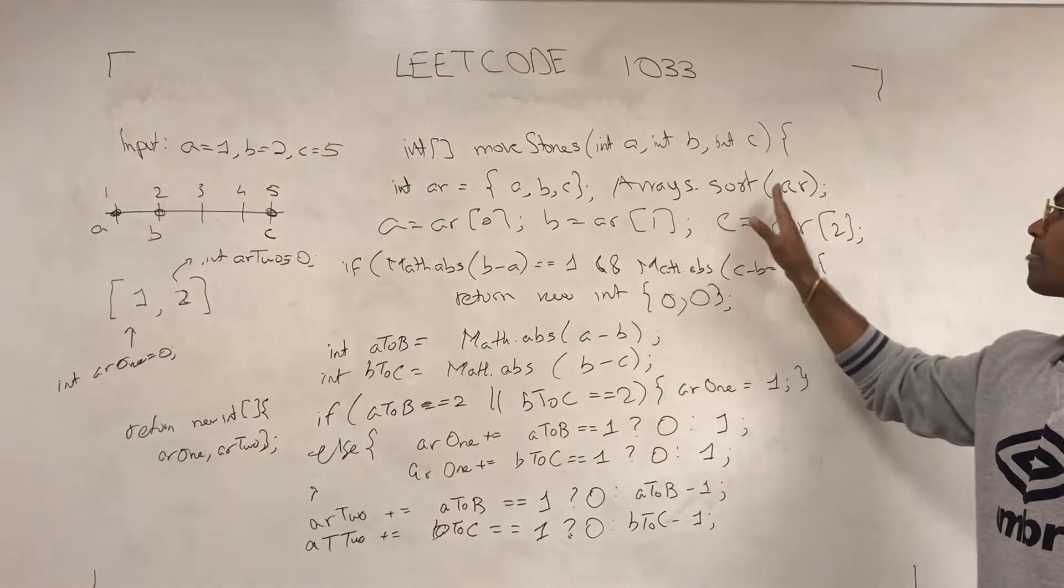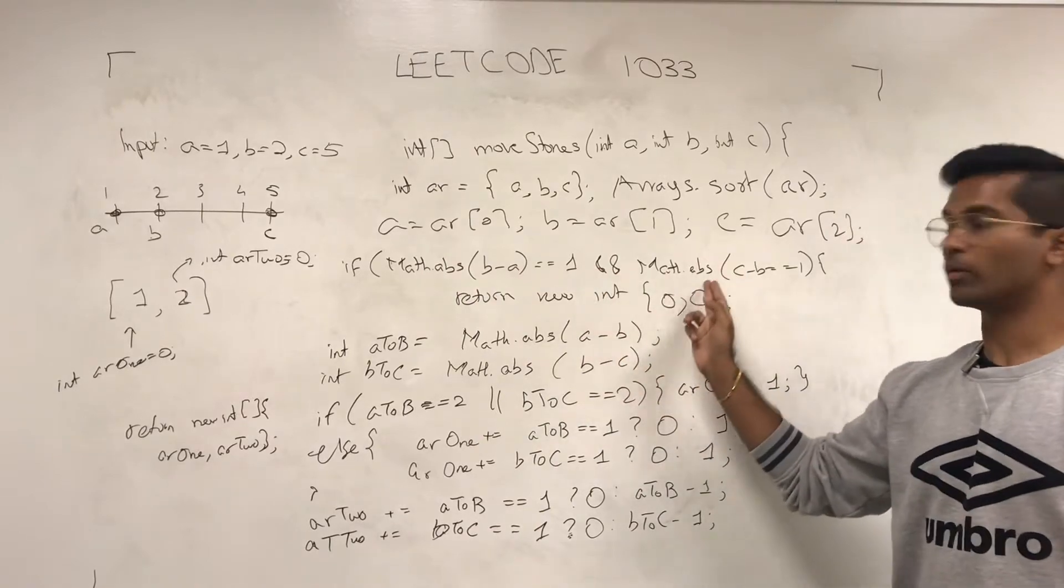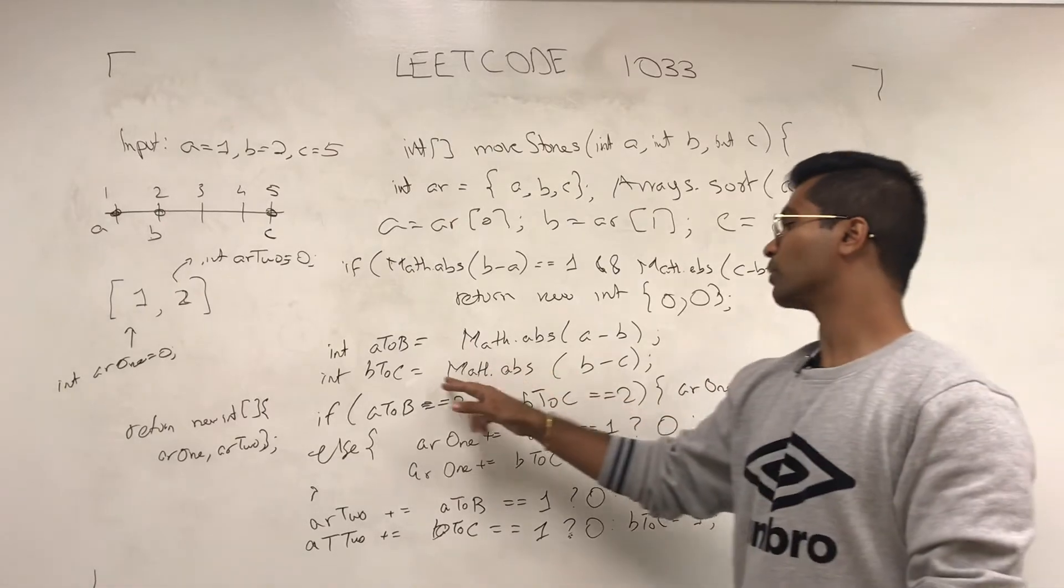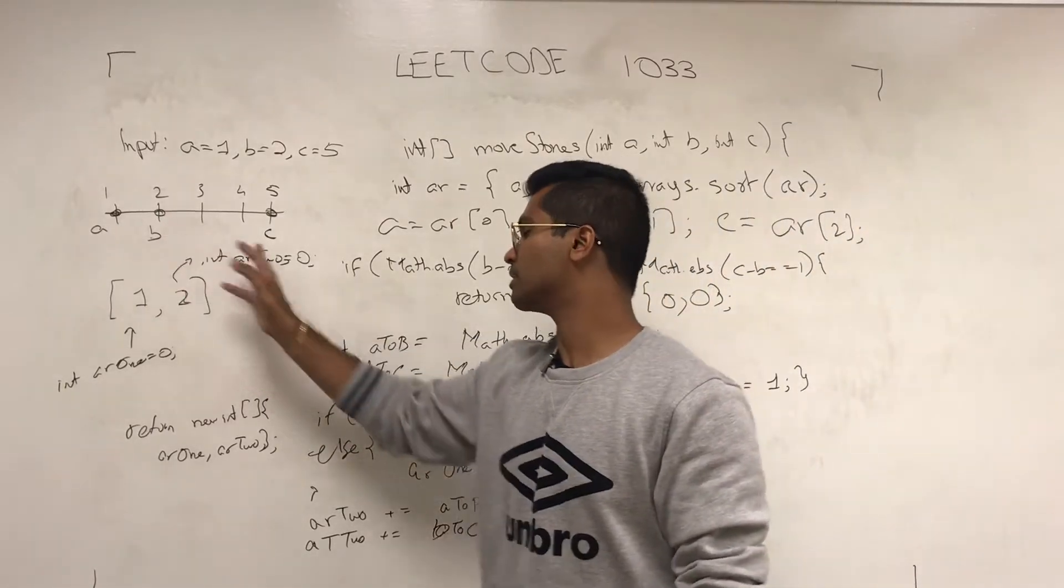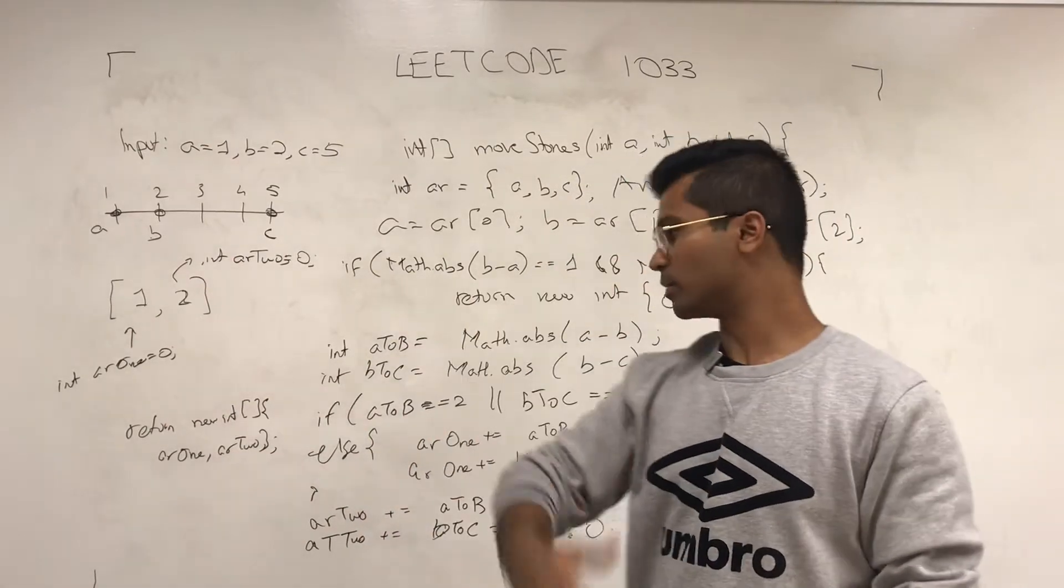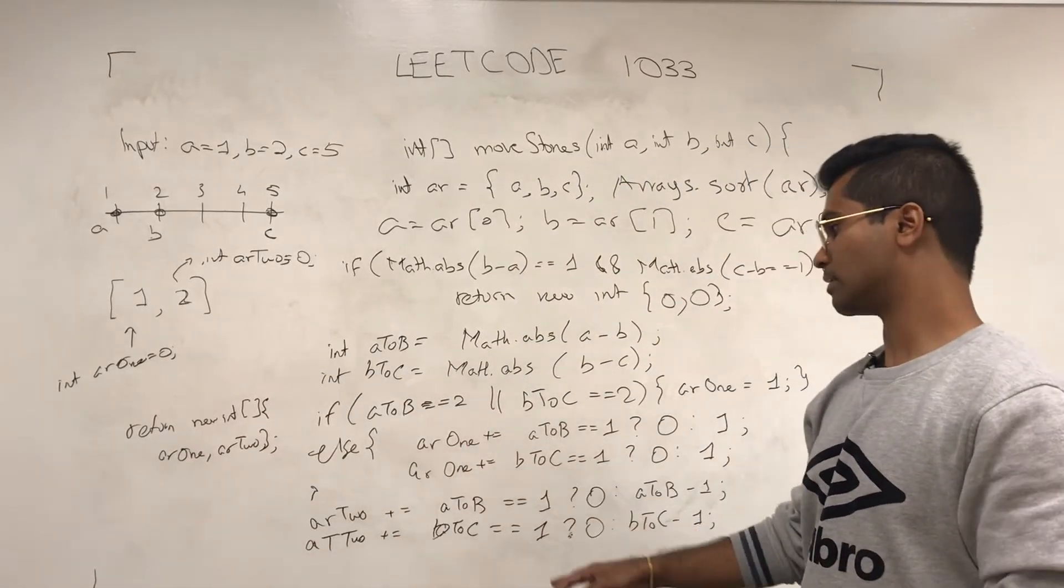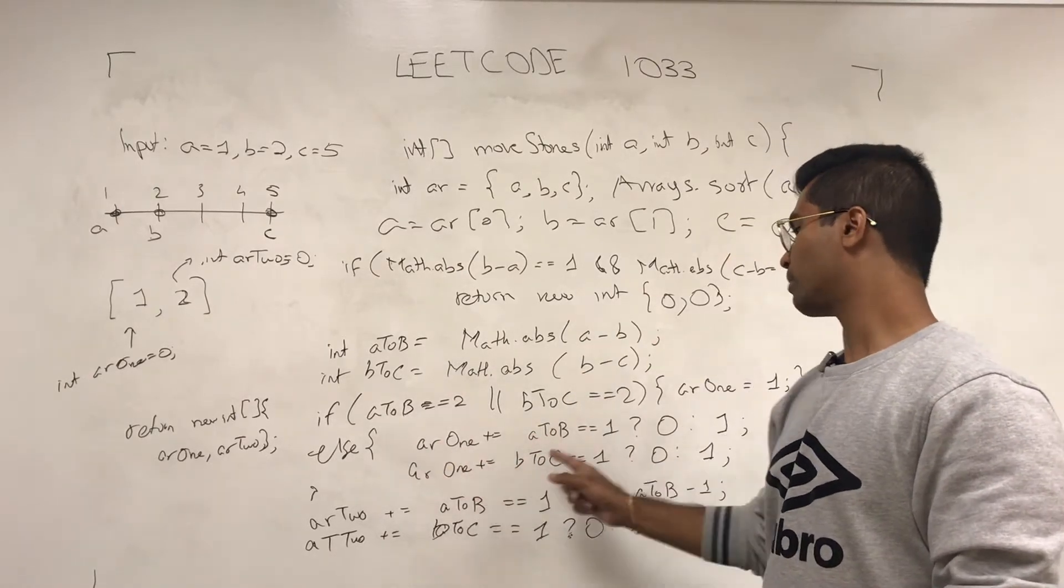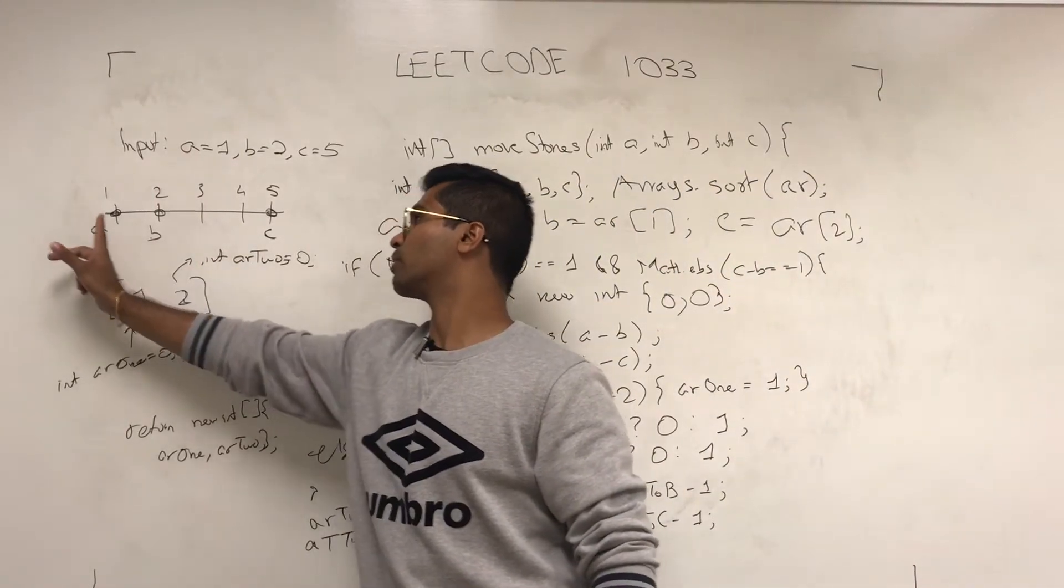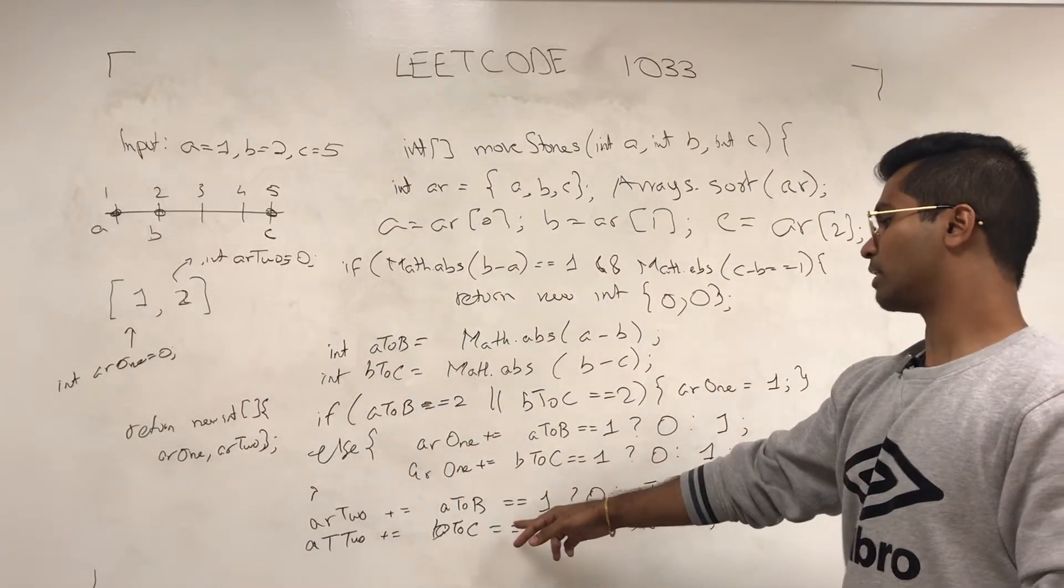So let's just look at it over again. We sort this one in the beginning so that A, B, and C are in ascending order. We check if they're already next to each other, one after the other. If so, we return 0, 0. Otherwise, we find what's the actual distance between A and B and B and C. If either one of the distances is just two away, all we have to do is take the other stone and put it in between. And we find the minimum, which is AR1. If neither of those are a distance of two, we increment AR1 by checking how much do we need to do. If it's pretty far away, all we have to do is take it and put it right next to it. If it's only 1 away, we don't do anything. That's why we have this conditional.